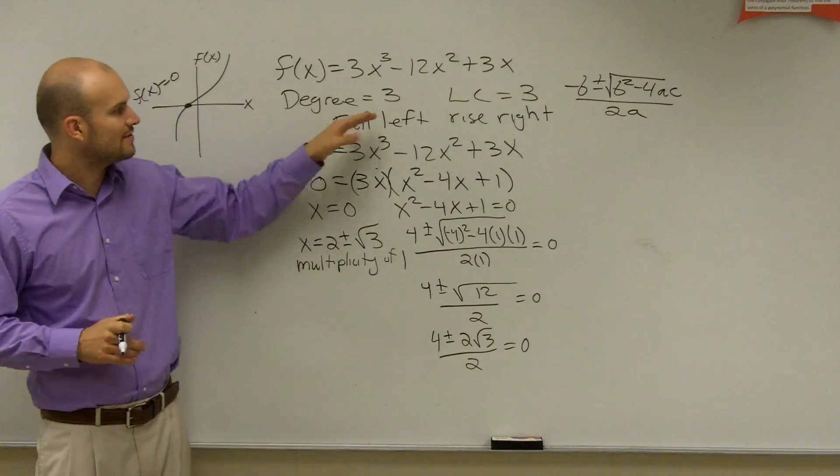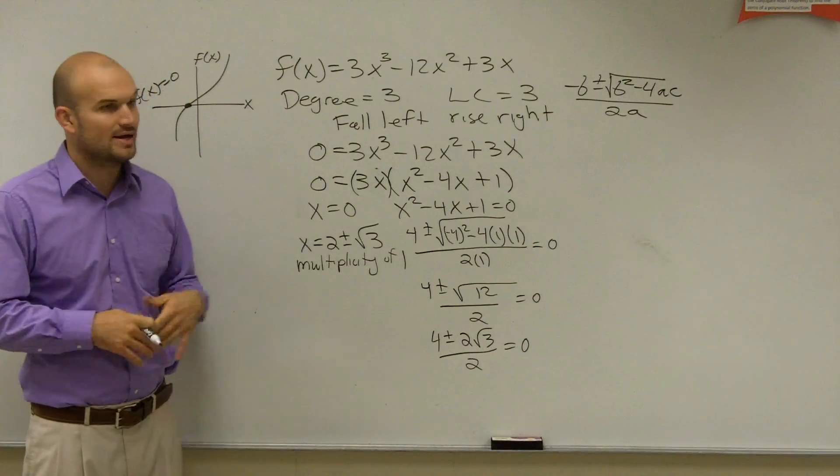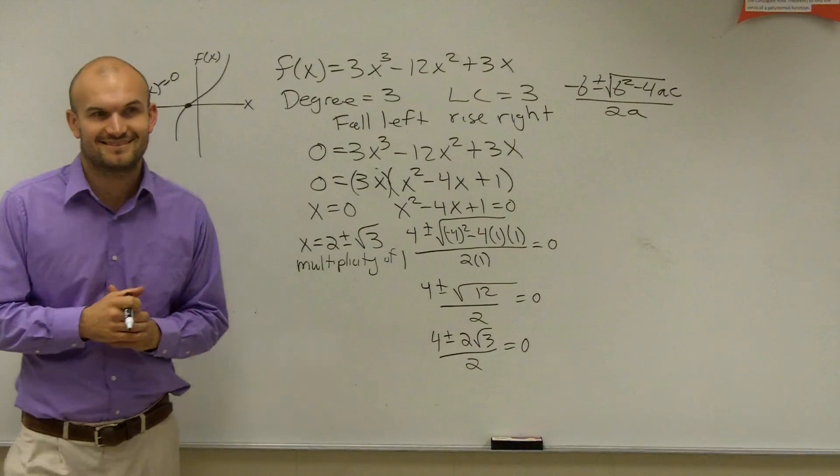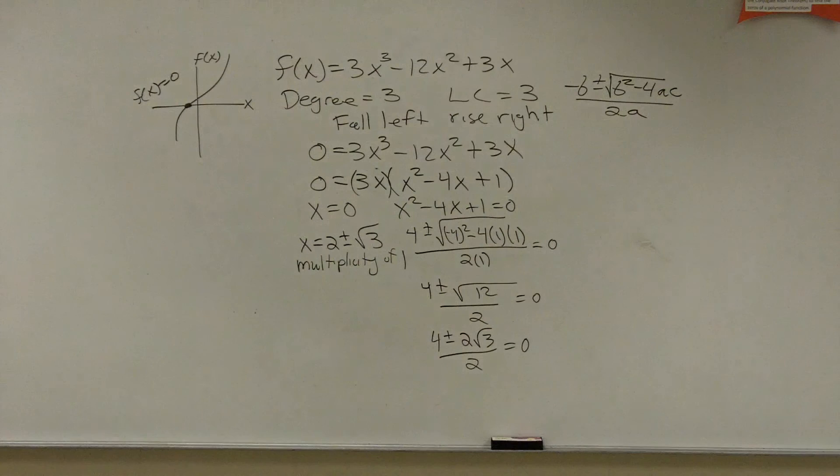And that's it. Then we have our fall left, rise right, and that's our front row. Any questions? Good. No questions? 2 plus square root of 3 and 2 minus square root of 3 are not the same, right? They're unique.